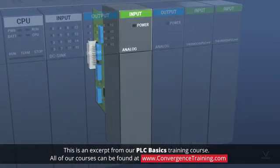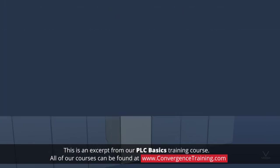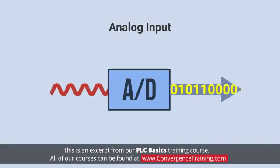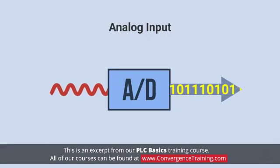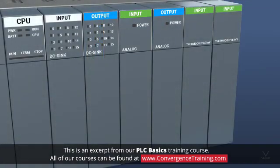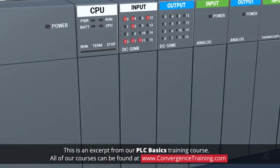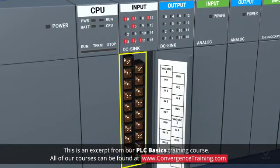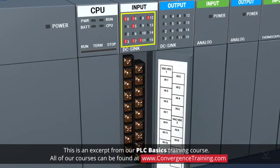While working with digital signals is a large part of what PLCs do, they can also work with analog signals. Analog input cards use A to D converters to convert electrical input signals into scaled computer-compatible digital values. Each input card has a set of input terminals and a set of LEDs that indicate the status of each input channel.